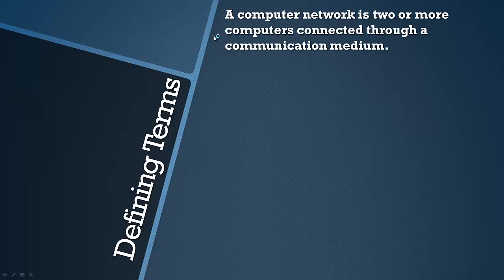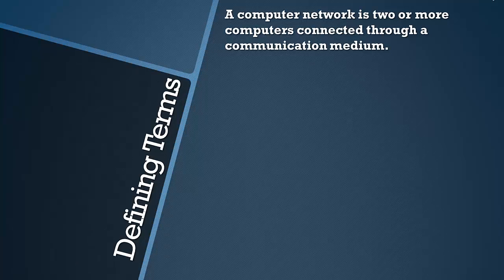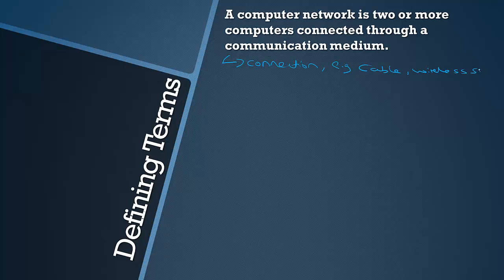First let's look at what a computer network is. It's basically two or more computers connected through a communication medium. That term 'communication medium' may be unfamiliar to you, but all it means is basically the physical connection between the network — it can be as simple as a cable or it could be a wireless signal.